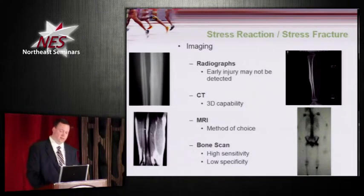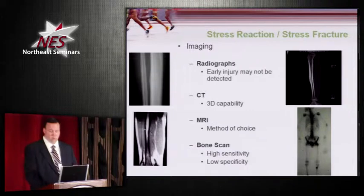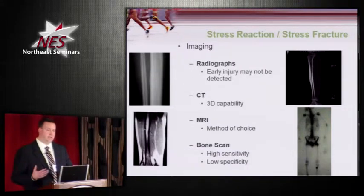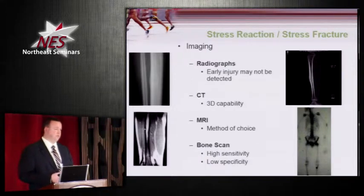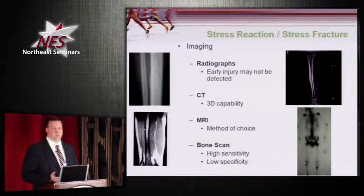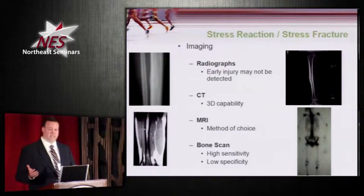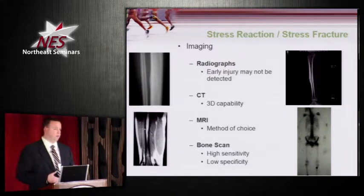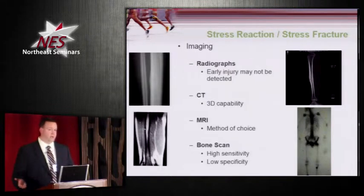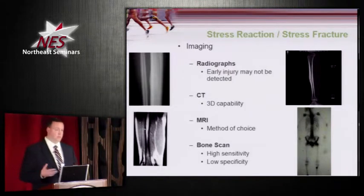CT can be nice from a 3D capability standpoint. MRI is probably the gold standard at this point. Bone scans have very high sensitivity but unfortunately very low specificity — if anything is going on at all, a bone scan will find it, but it doesn't tell you what it is. It just tells you something is wrong, and then typically you have to do another test to figure that out, often an MRI.